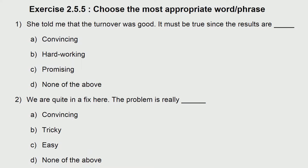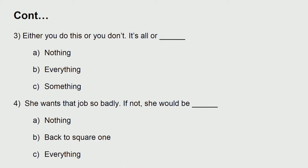Next exercise — choose the most appropriate word or phrase. Number 1: she told me the turnover was good; it must be true since the results are dash — convincing, hardworking, promising, or none of the above. Number 2: we are quite in a fix here; the problem is really dash — convincing, tricky, easy, or none of the above. Number 3: either you do this or you do not — it is all or dash — nothing, everything, or something. Number 4: she wants that job so badly; if not she would be dash — nothing, back to square one, or everything.